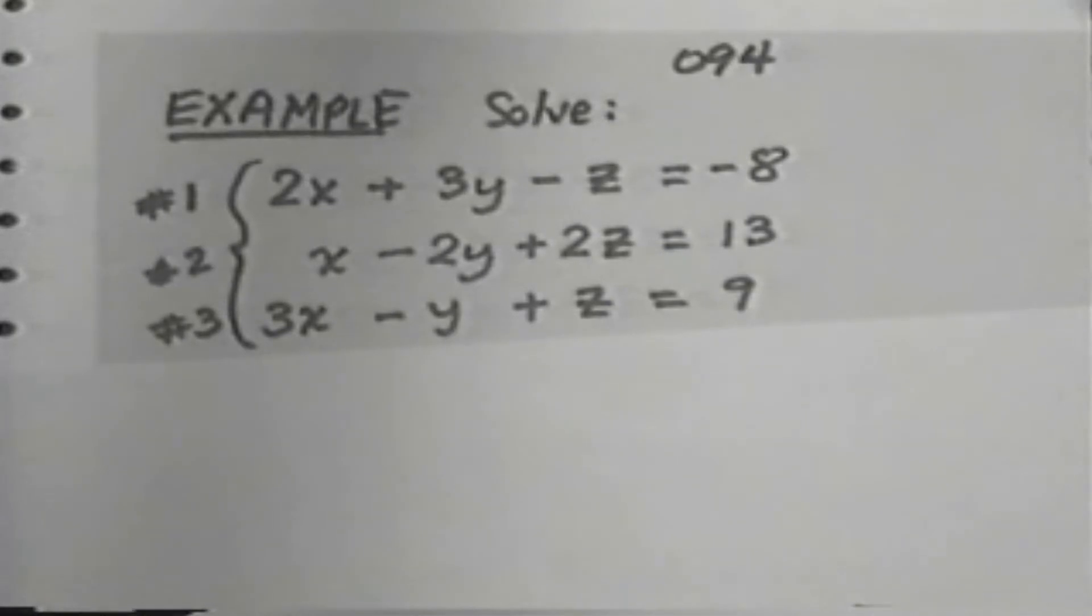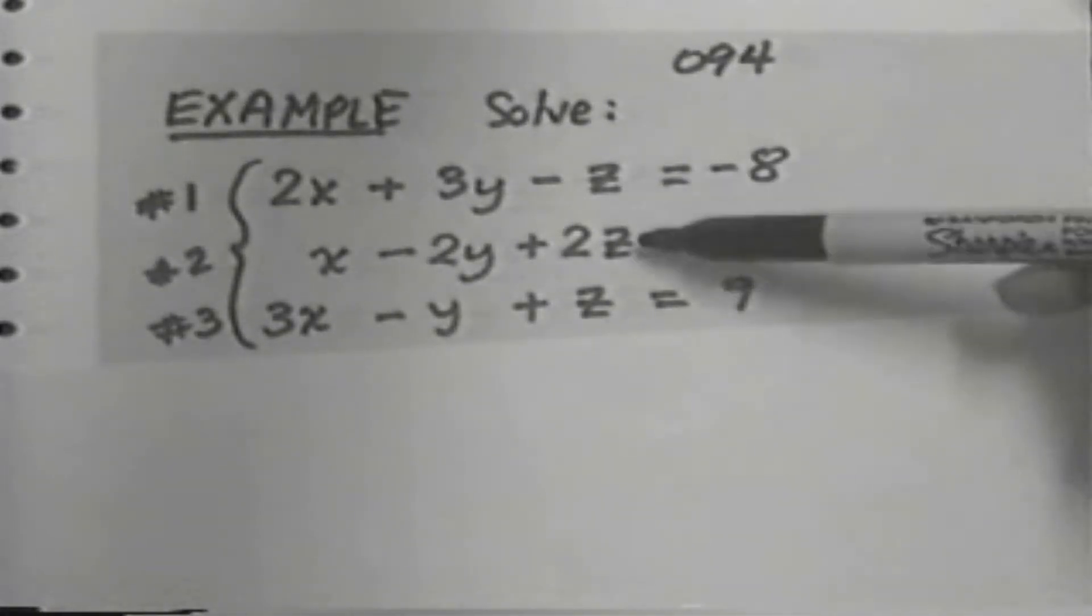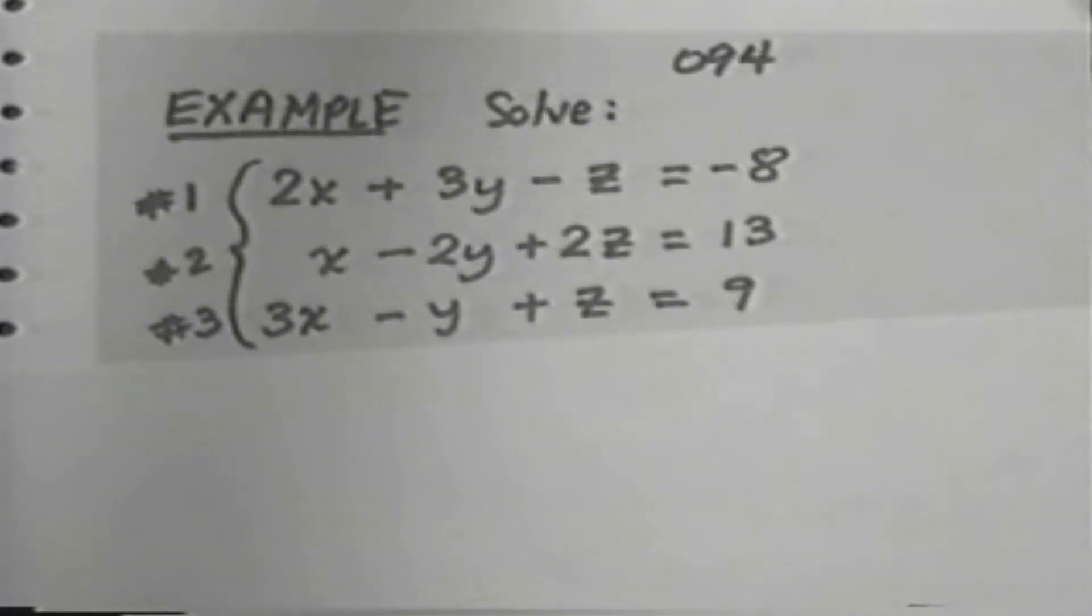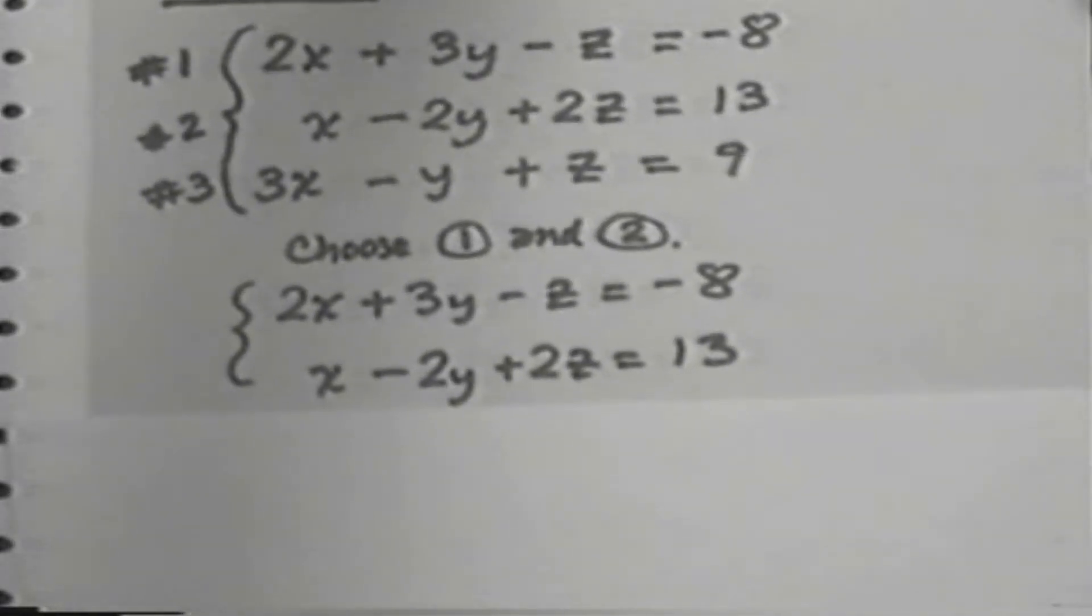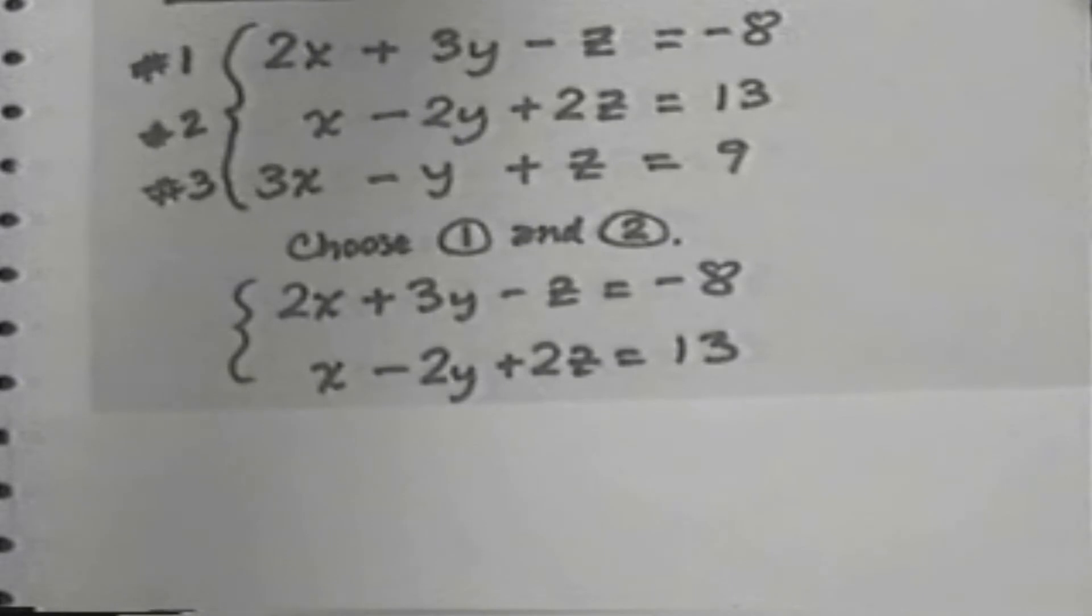I'm going to choose to eliminate the letter z. I'm going to pick, first of all, equations 1 and 2. And so I'm creating a small system with equations 1 and 2. I'll recopy those two equations as if we have a new system that's now very small.